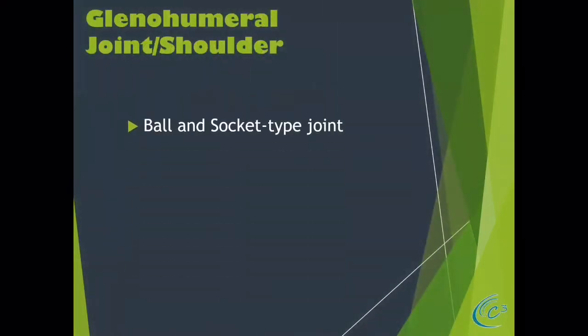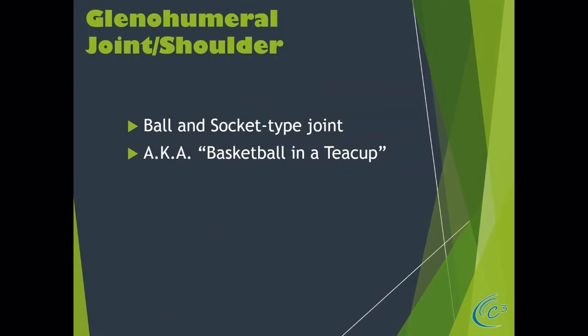Let's talk about the shoulder. We have the glenohumeral joint, which is a ball and socket type of joint — we're going to see that again in the lower extremity in a moment. This is also known as a basketball and a teacup relative to its instability. Inherently, this joint is unstable. There are a number of muscles and tendons that maintain its stability, but it's easily compromised given the physics of the upper extremity.